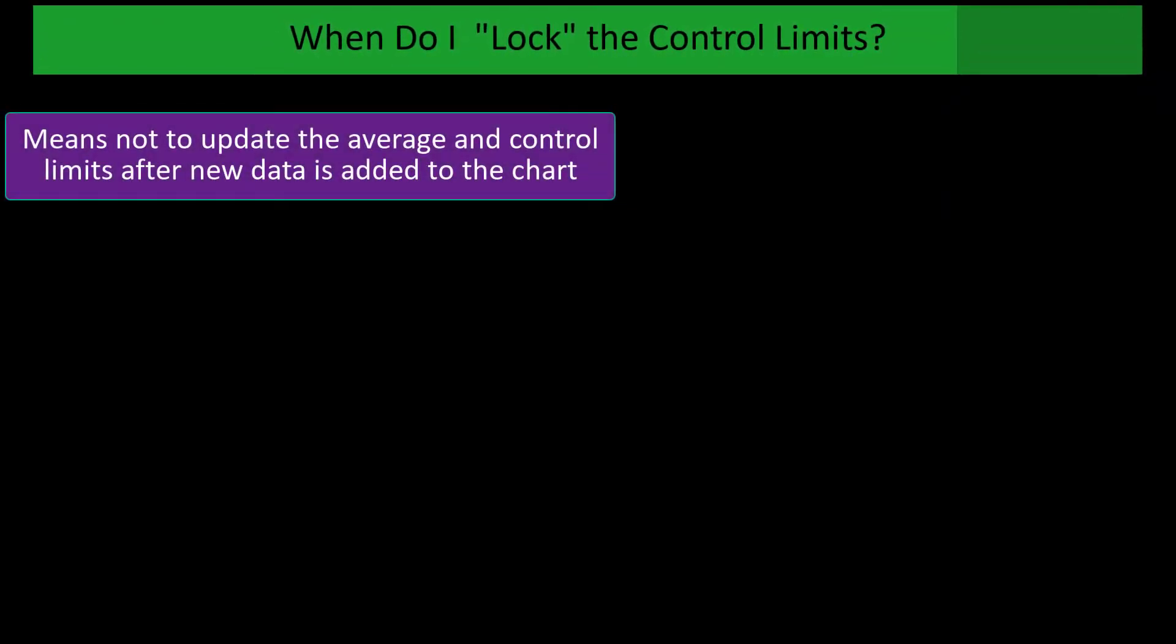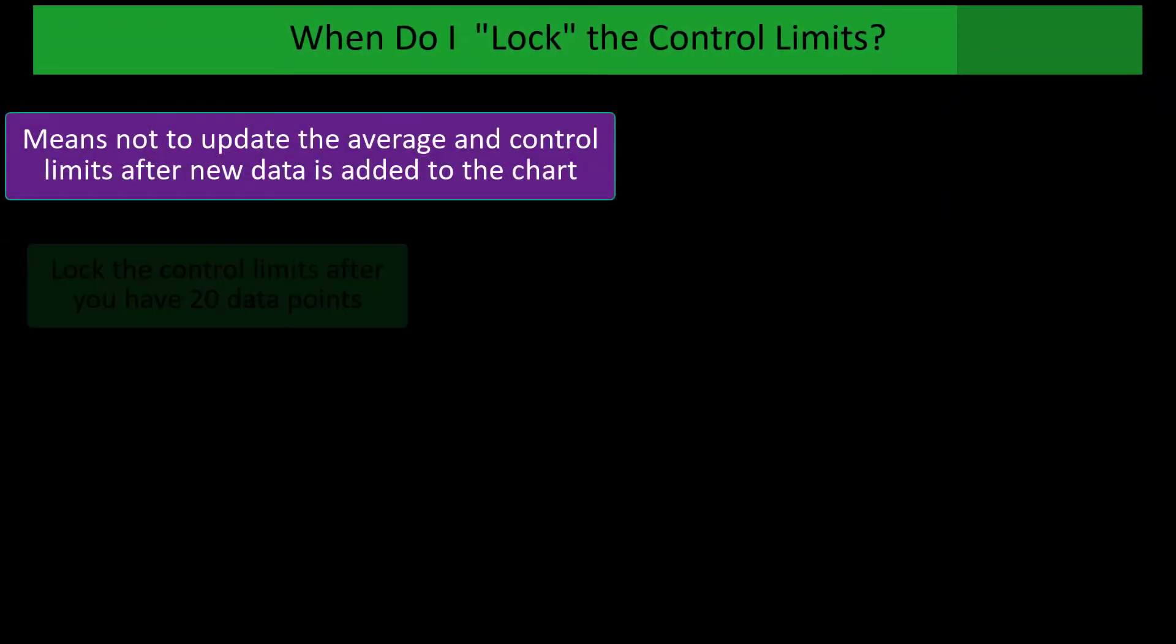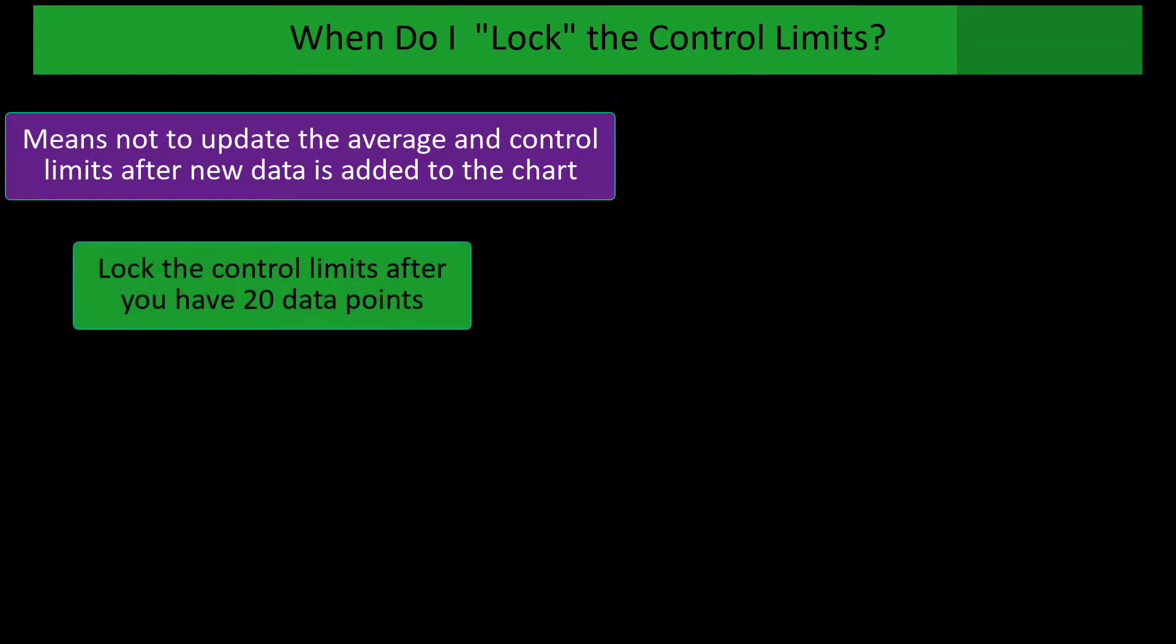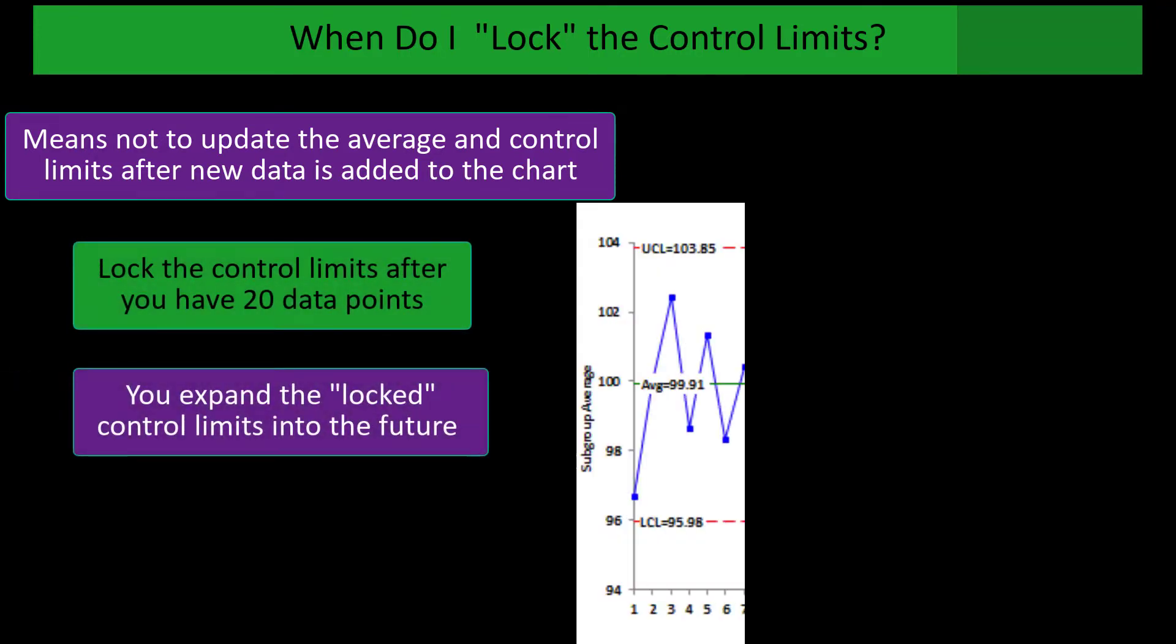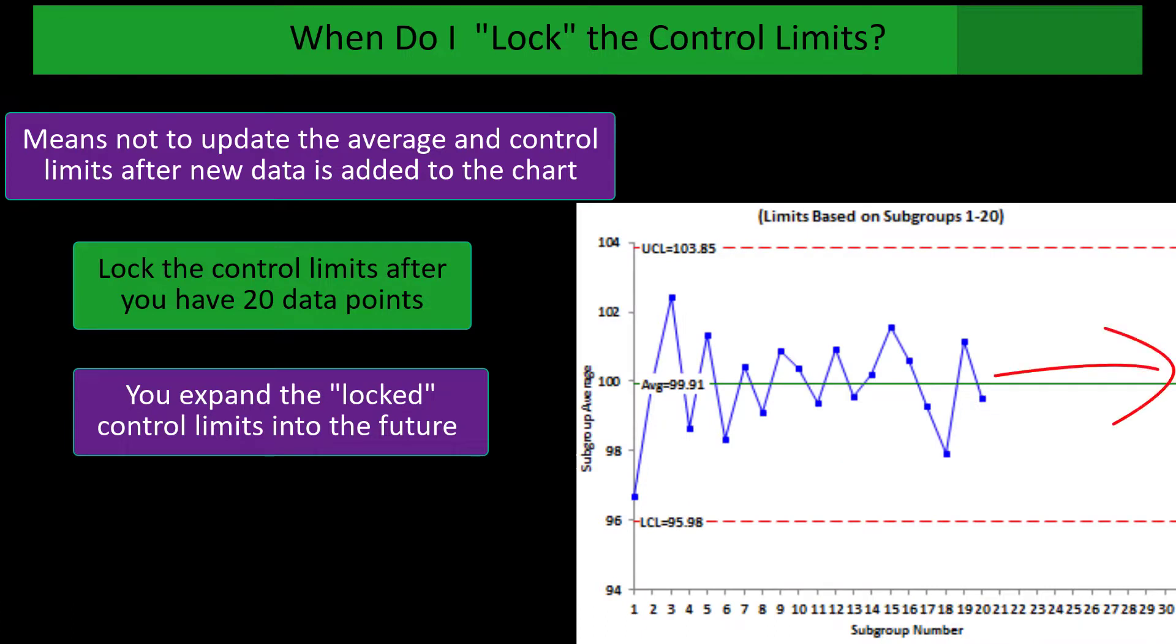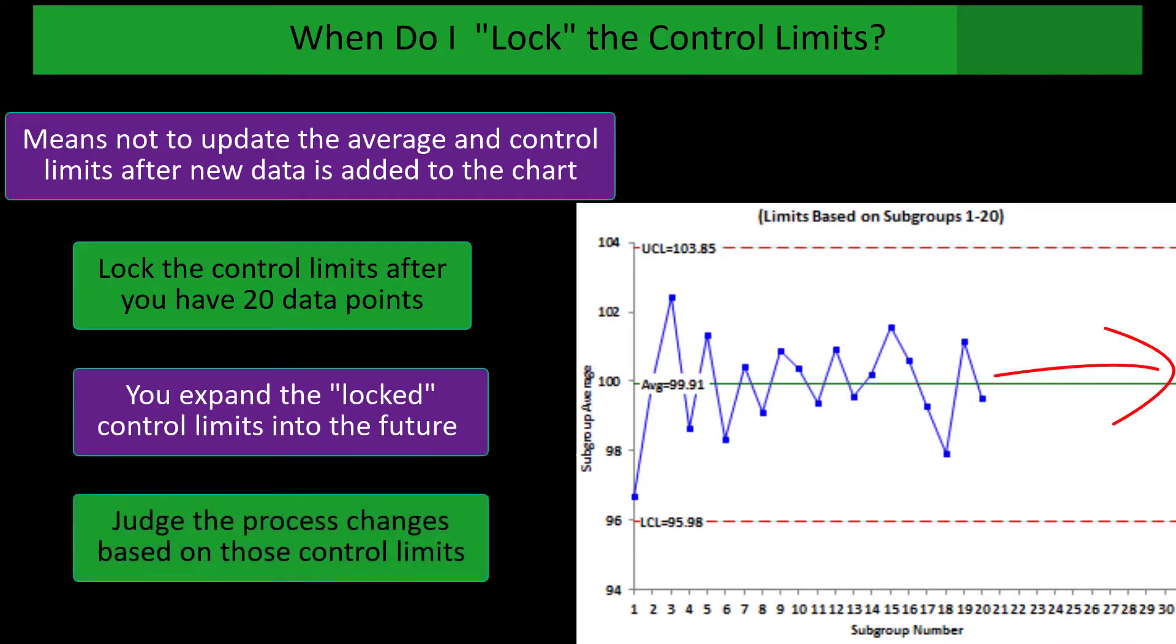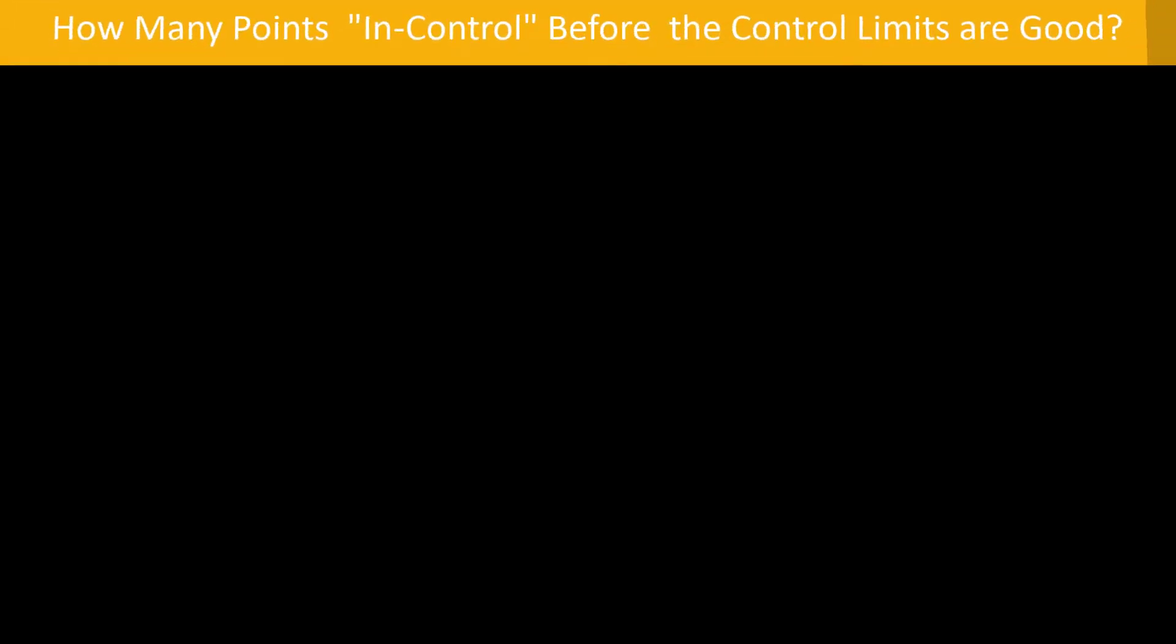So when do I lock the control limits? Locking means not to update the average and control limits after new data is added. So you lock the limits after you have those 20 data points and you expand the locked control limits into the future. And that's what you judge the process against in the future.